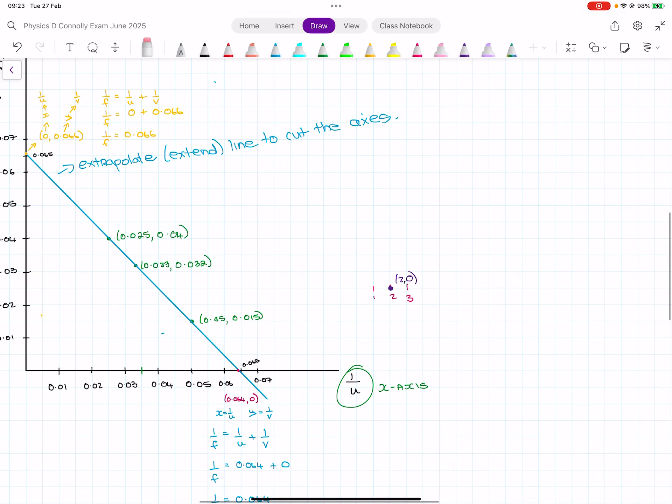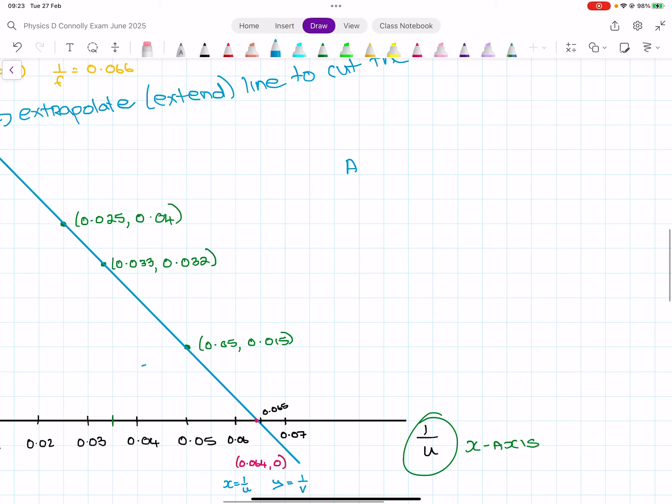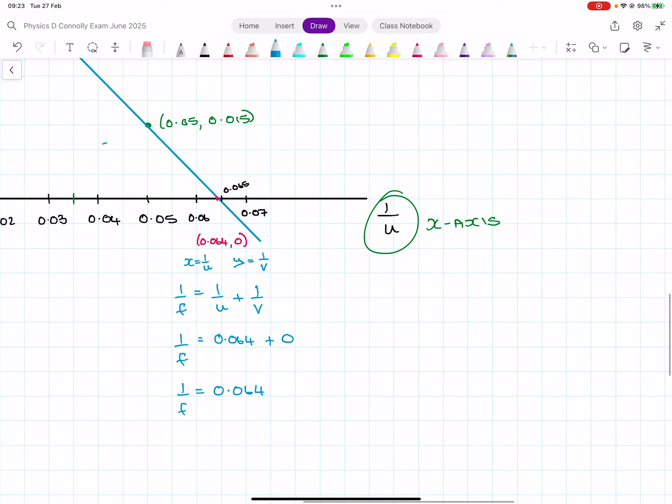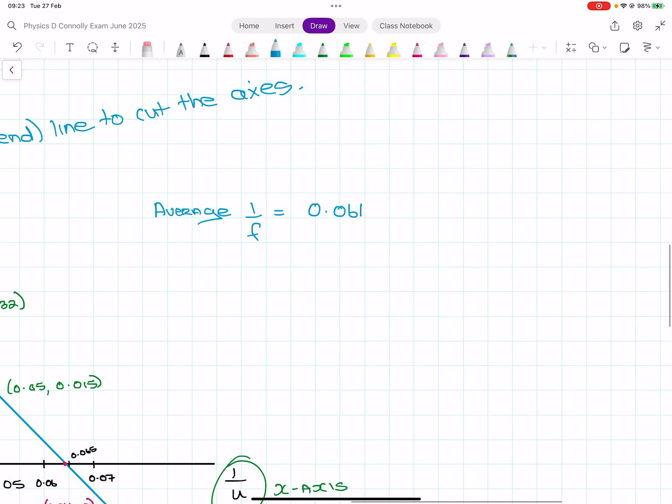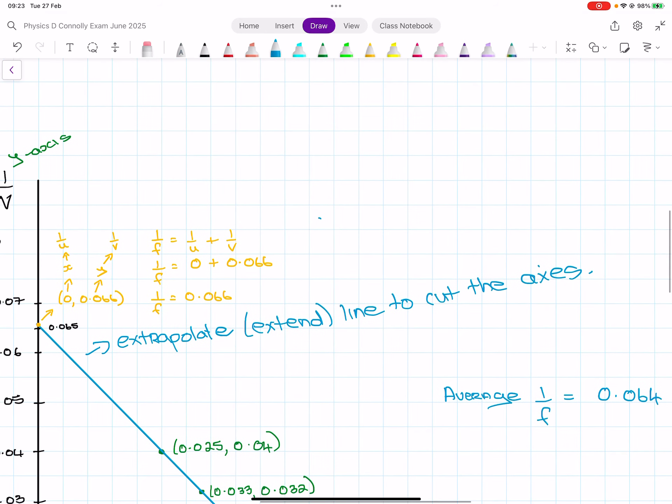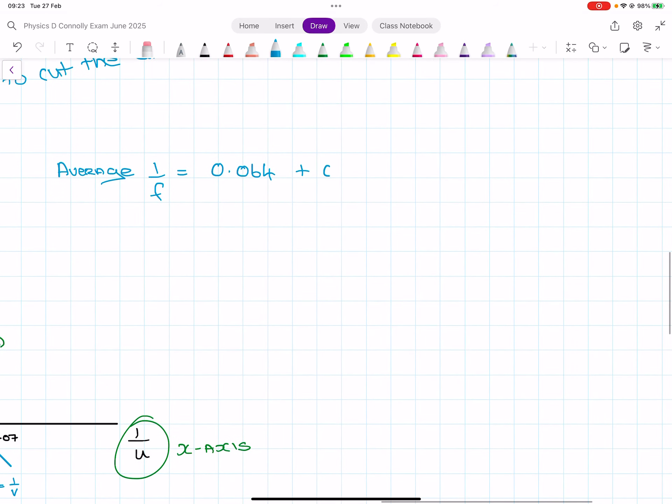So I've gotten two values from my graph for 1 over f. Over here I'm going to get an average 1 over f. So from down here 0.064 and from over here 0.066. It's an average, so two numbers added together divided by 2. That's going to be 0.065.